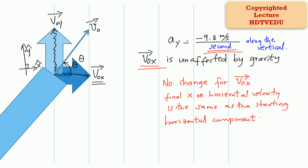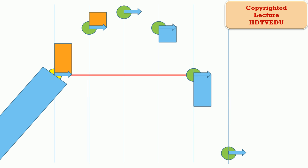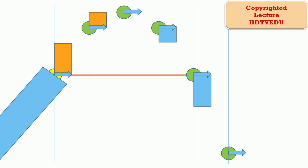That means the final horizontal velocity is the same as the starting horizontal component — the horizontal component of the velocity vector does not change. Only the vertical velocity is affected by the acceleration due to gravity. Acceleration due to gravity points vertically down, towards the center of the Earth, so the horizontal component of the velocity vector remains unchanged.